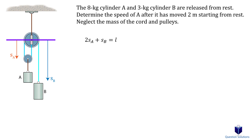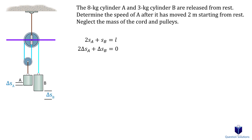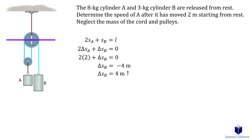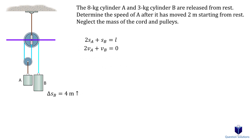We have 2SA plus SB equals the total length. Considering a change in displacement using delta, we want to figure out how much cylinder B moves when cylinder A moves 2 meters. Plugging in 2 meters for the change in displacement of cylinder A, cylinder B moved negative 4 meters — meaning it moved up 4 meters, since we drew position coordinates downwards so downward movement is positive. To find the speed of cylinder A, we take the derivative of the constraint equation to get a velocity relationship.